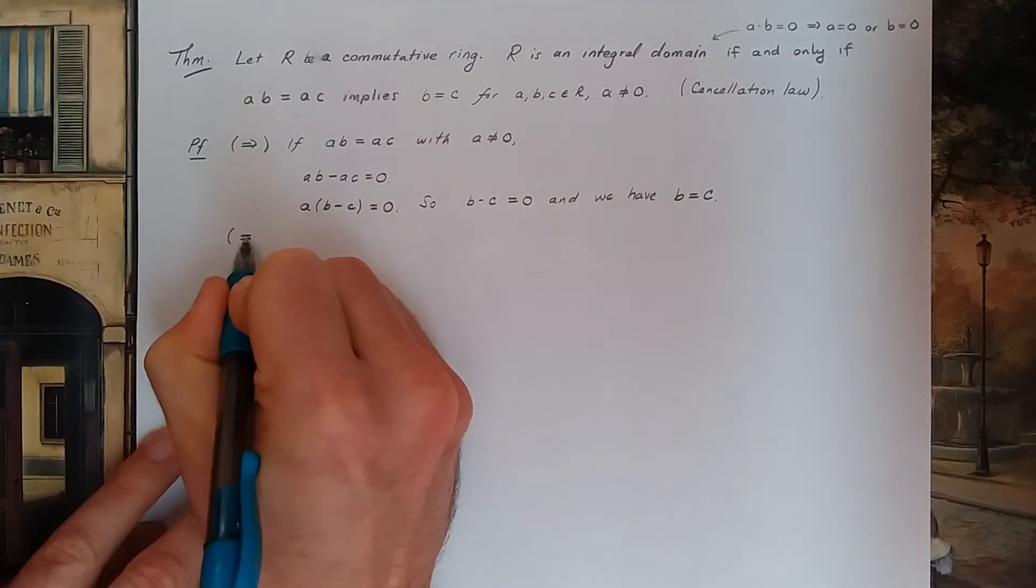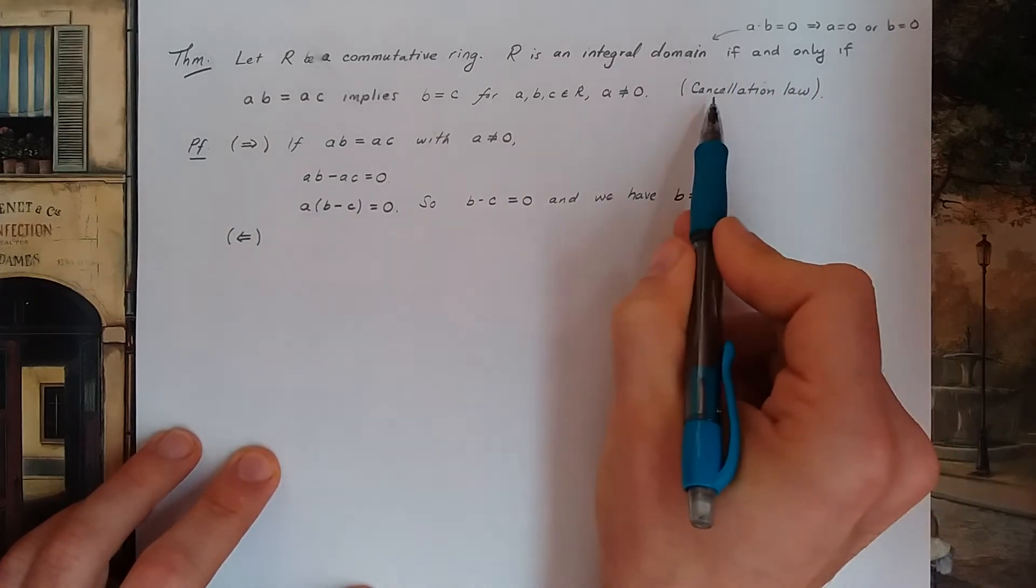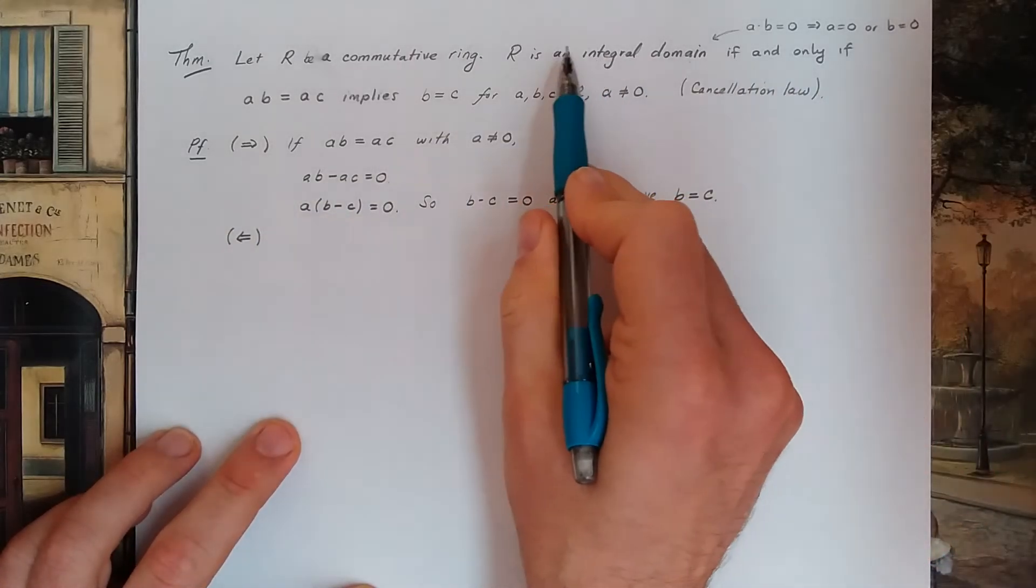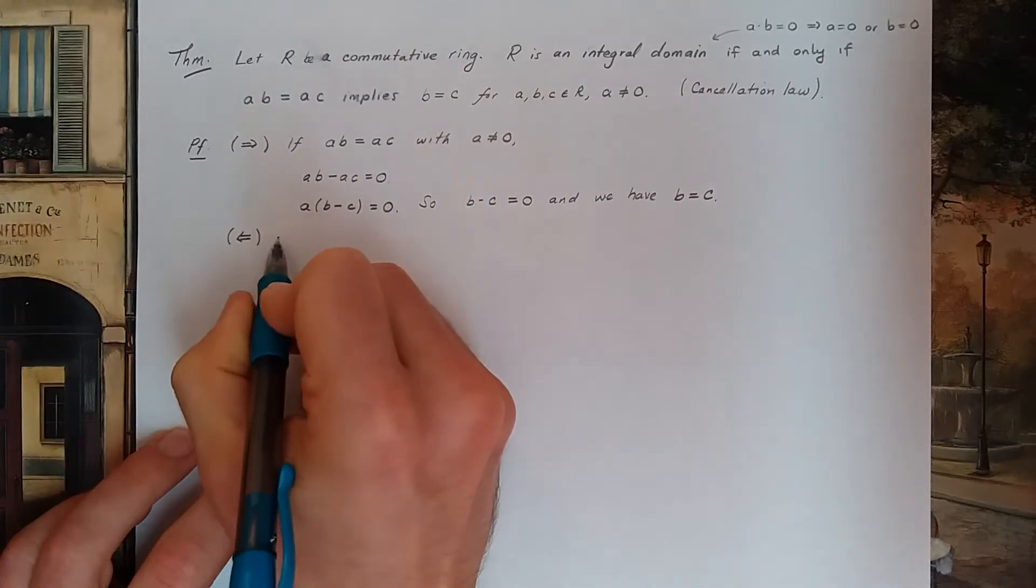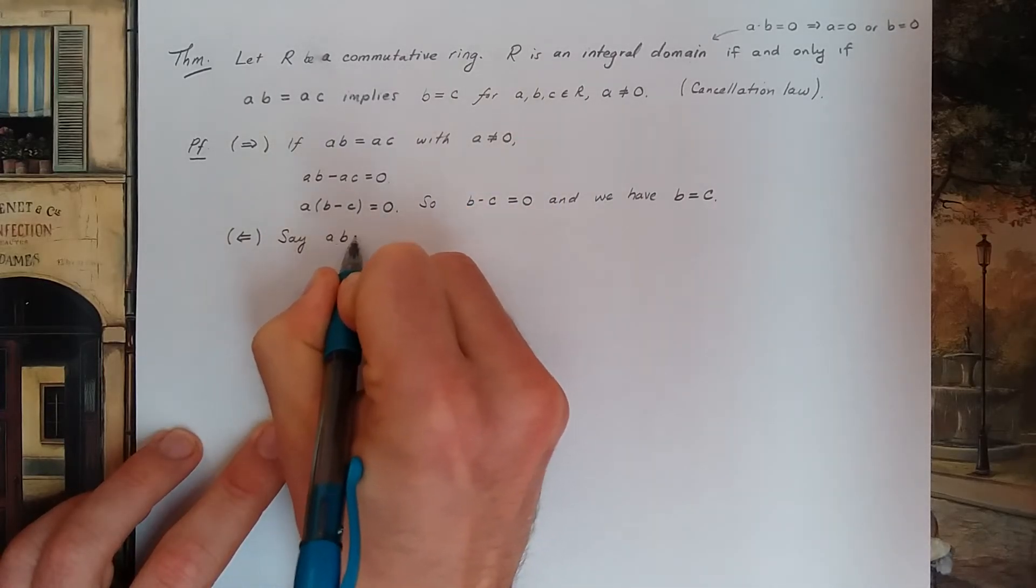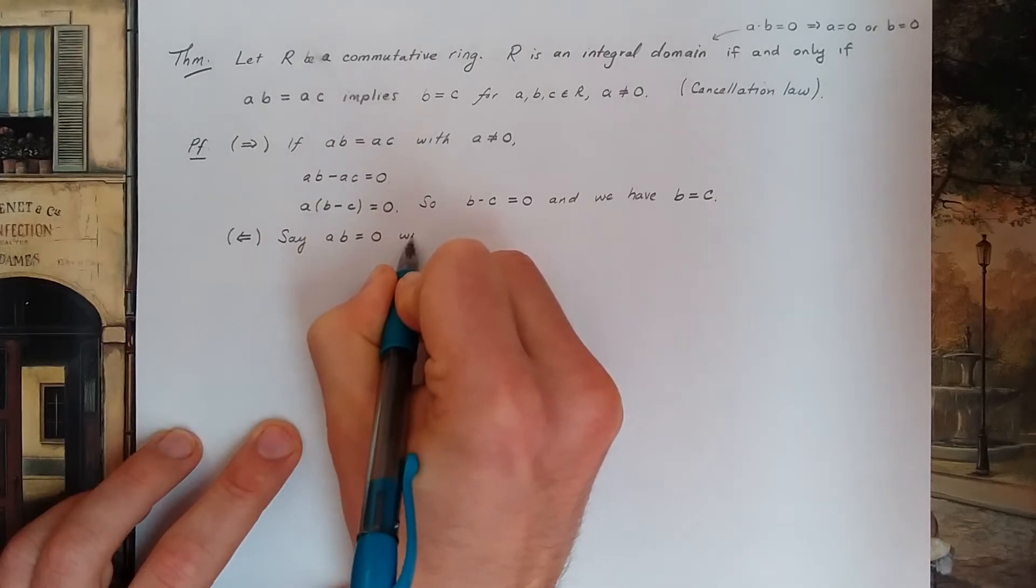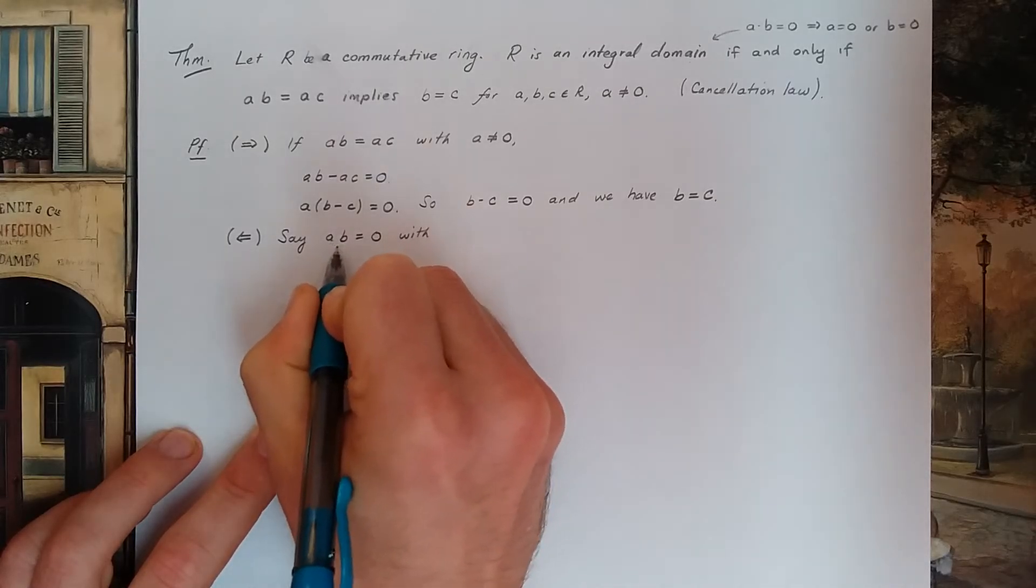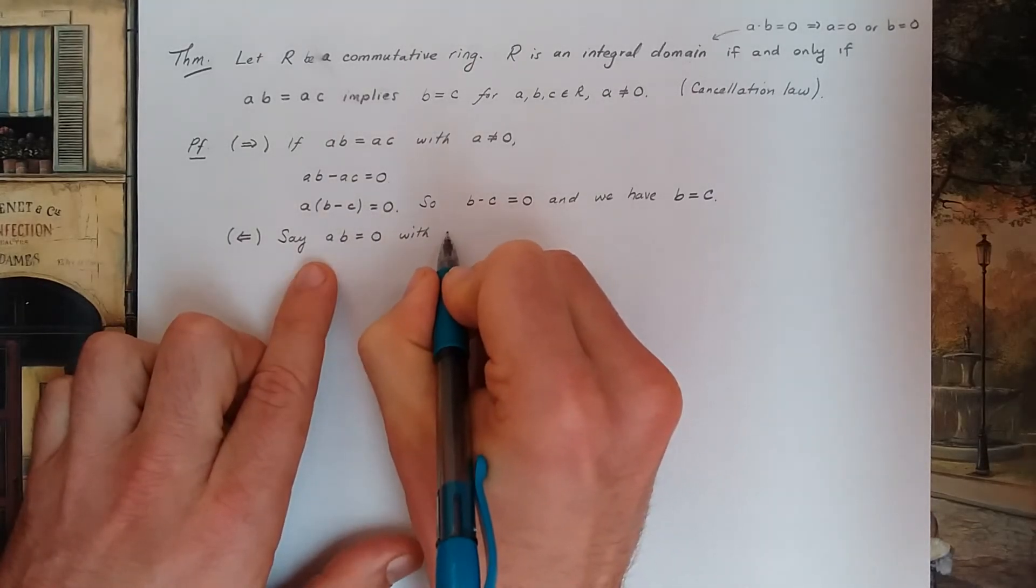Let's go the other way. Now I'm gonna assume the cancellation law holds. I want to show I have an integral domain. So let's say that I have a times b equaling zero, and let's say a is not zero.